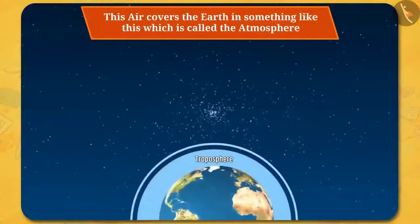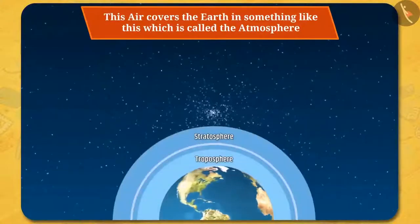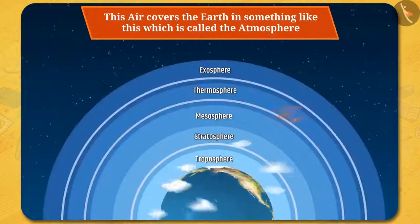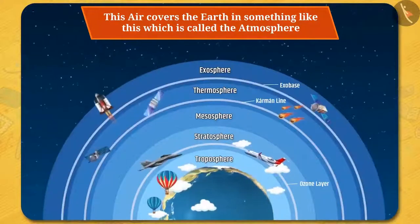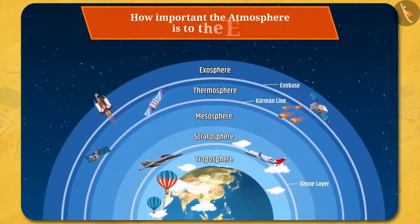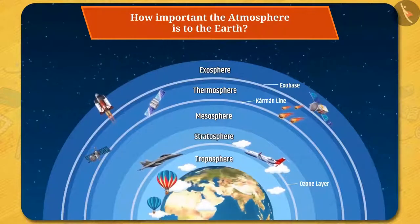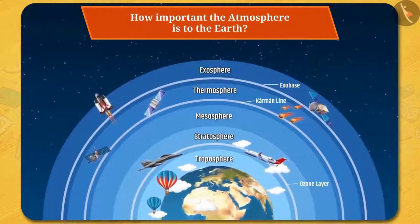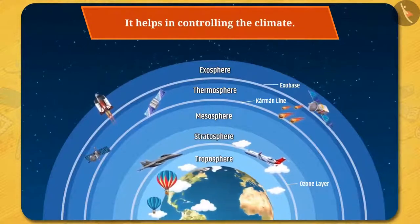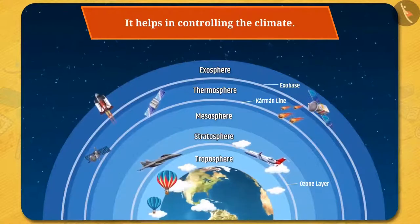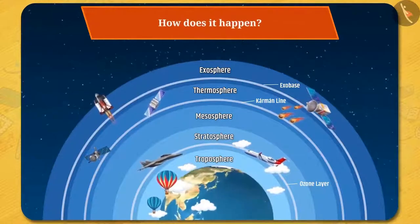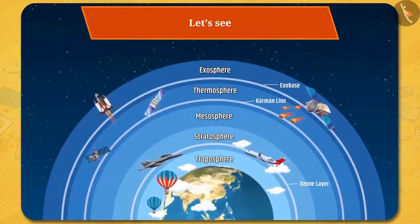This air covers the earth in something like this, which is called the atmosphere. Do you know how important the atmosphere is to the earth? It helps in controlling the climate, but how does it happen? Let's see.